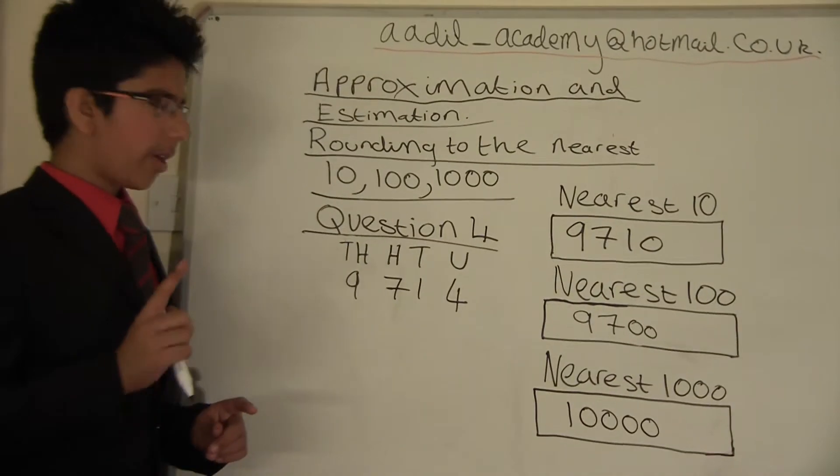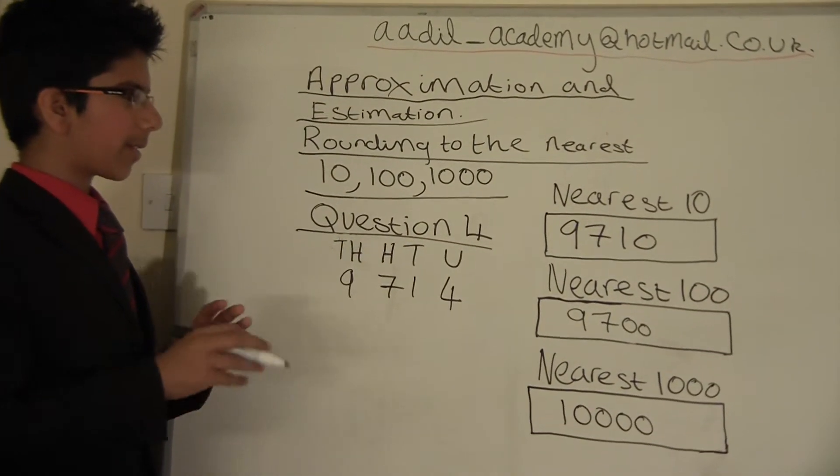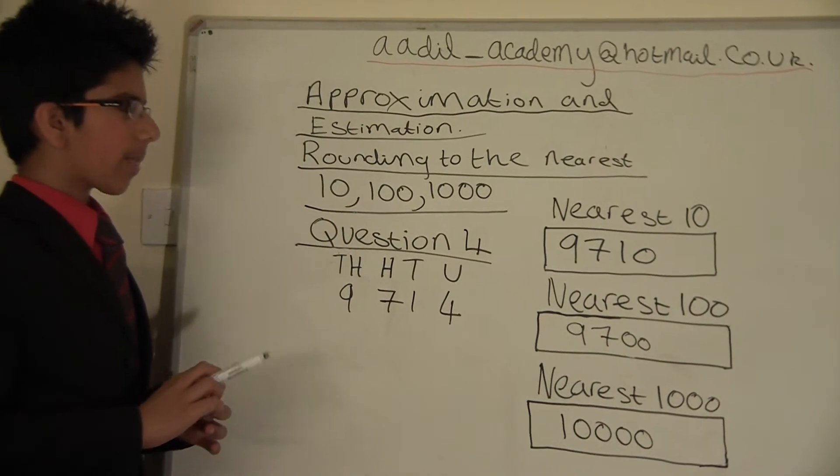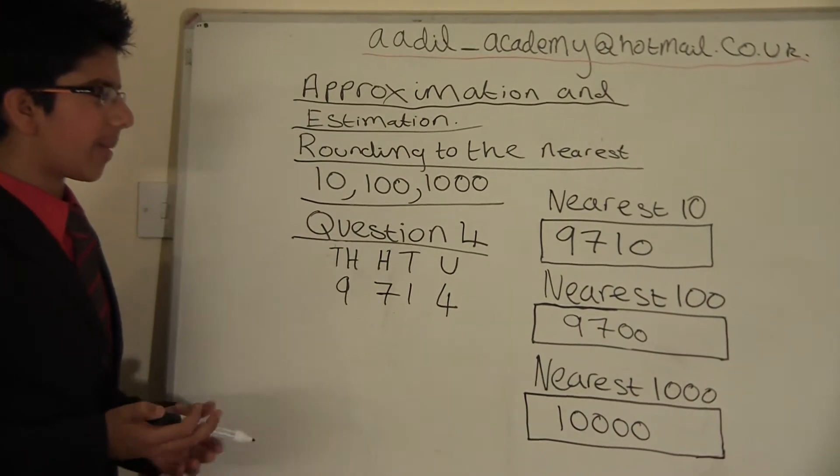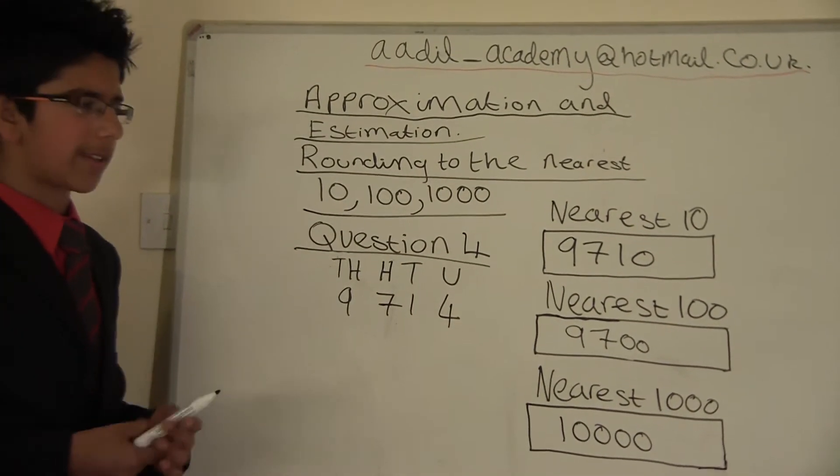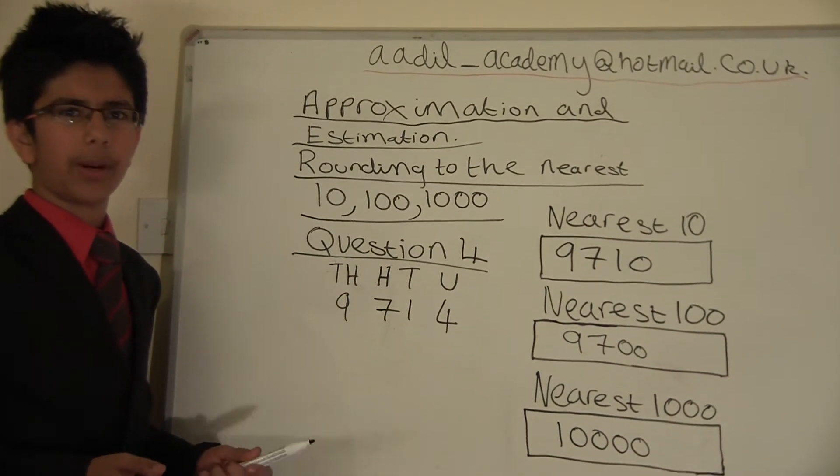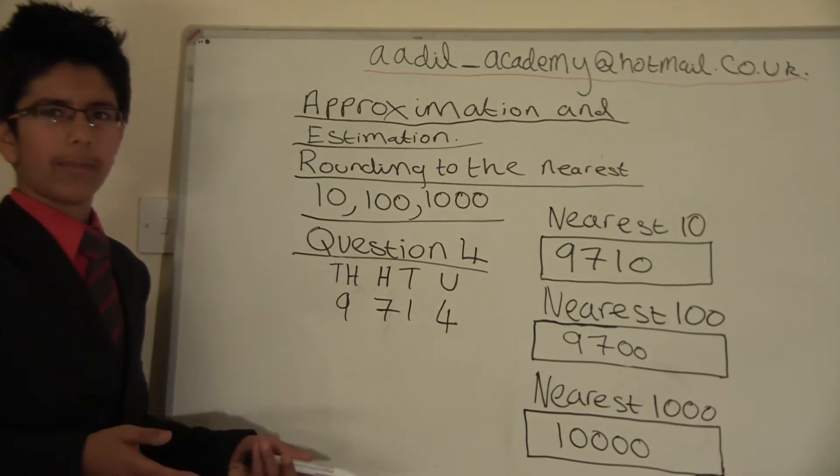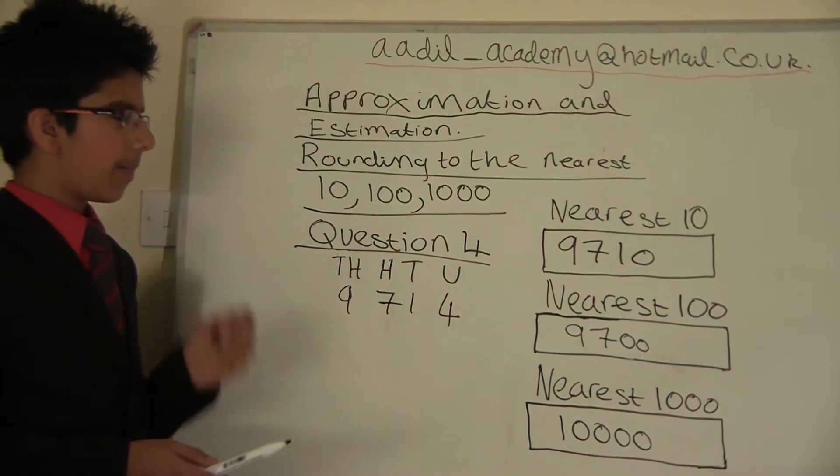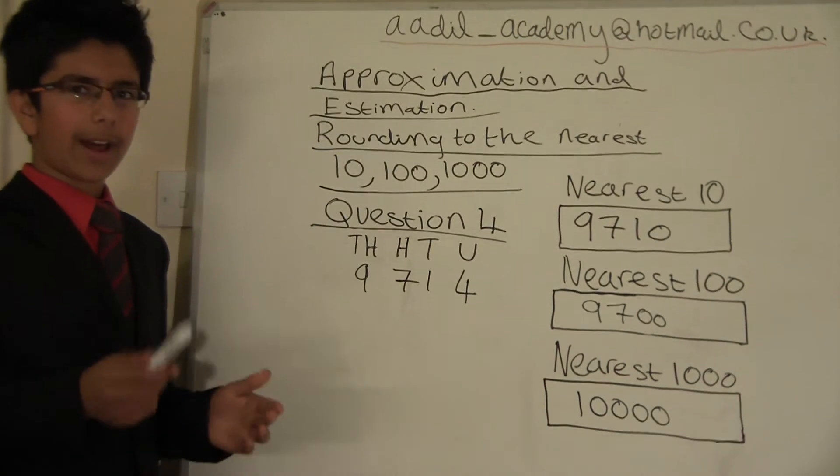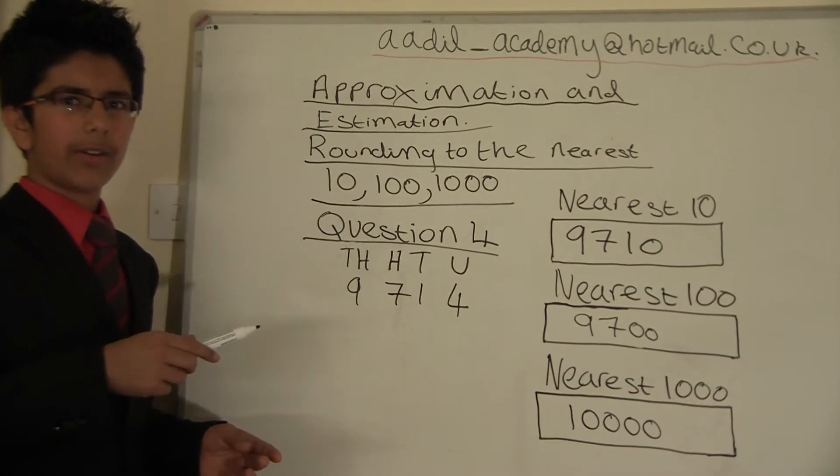One more thing I want to tell you - I'm going to give you an example. If a news reporter says that 4,225 people went to a cricket match or football match, he wouldn't say that. He will just round it to the nearest 1000 or the nearest 100.